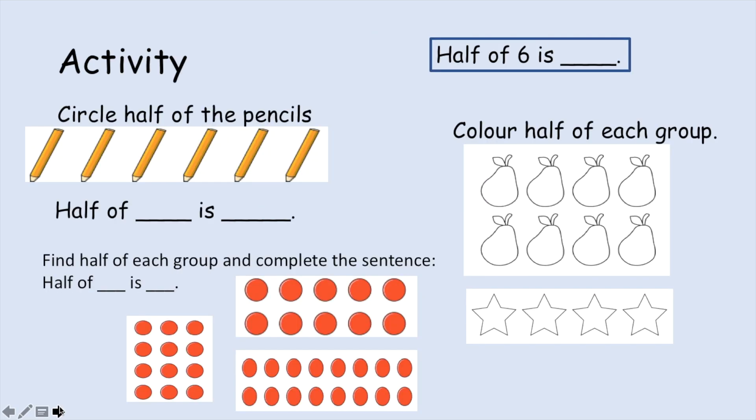Here is your activity. So everybody is doing the same activity today. Circle half of the pencils and complete this sentence: half of something is something else. Half of six is... Color half of each group. So not half of each pair, half of the group and half of the stars. Find half of each group and complete the sentence of these counters. Half of something is something. So you need to complete that sentence for each group of counters.